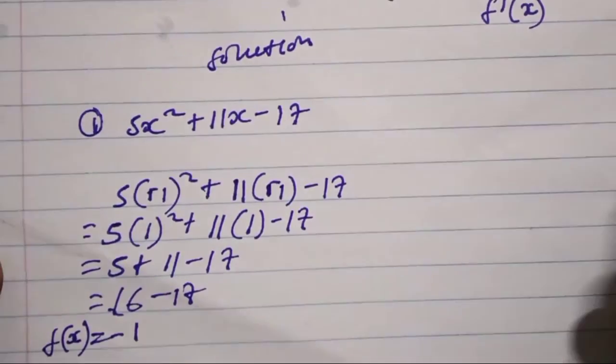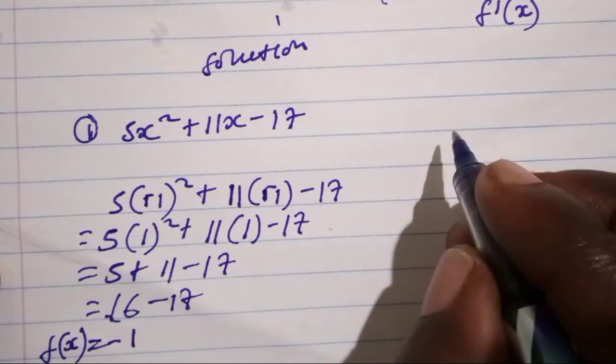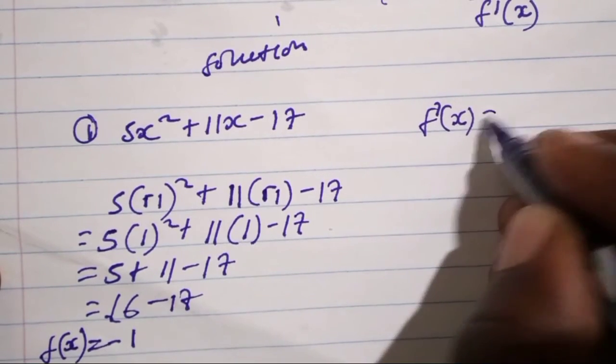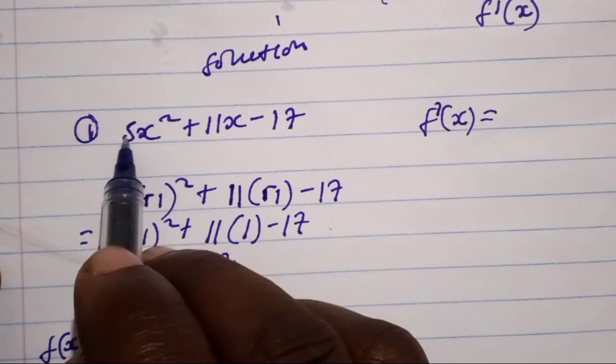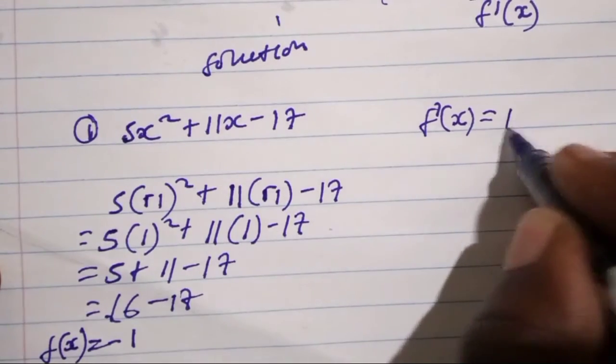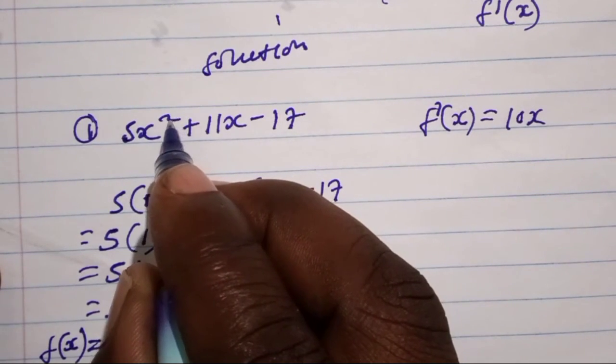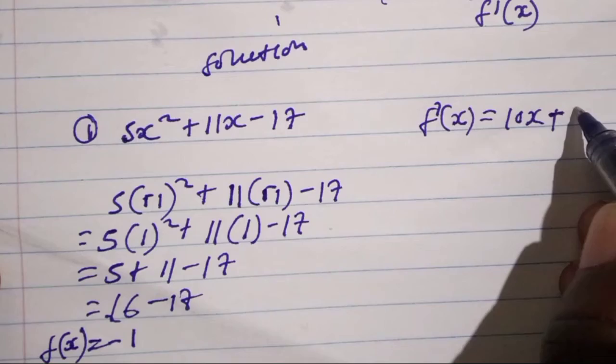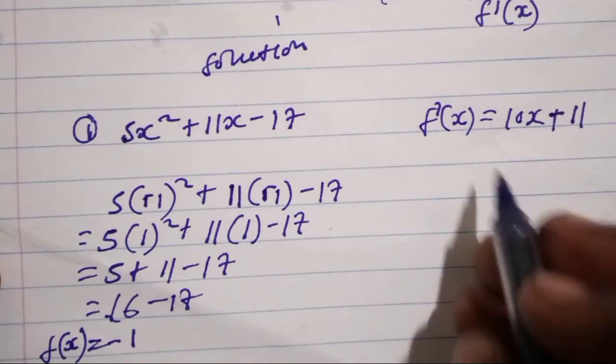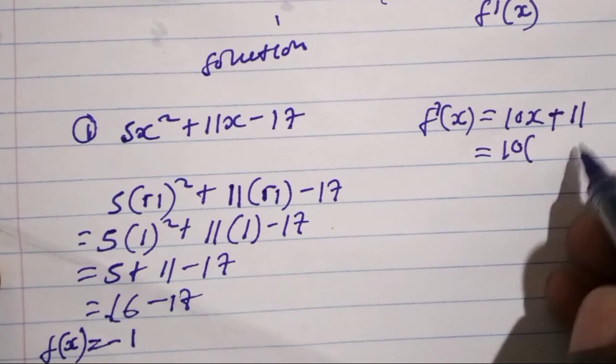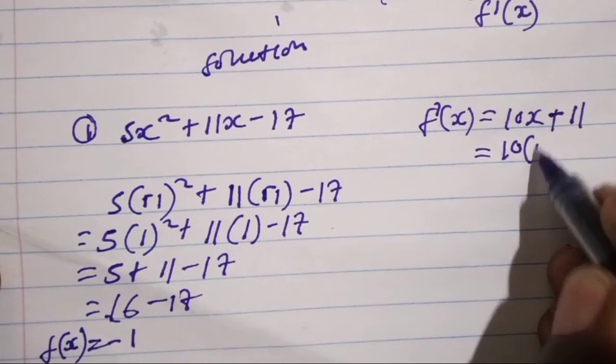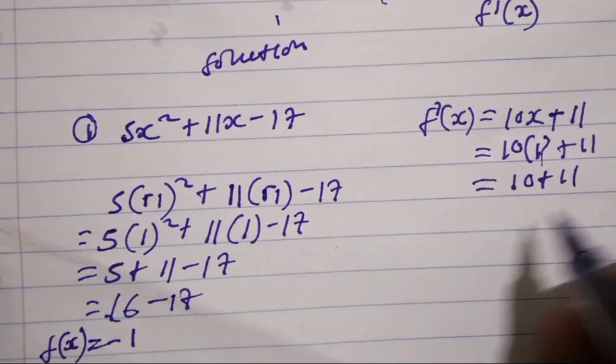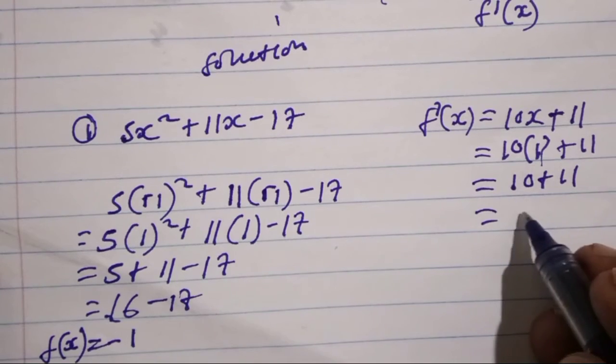Let's try to find this value. Let's differentiate this function which we have been given. f'(x), the derivative, will be if you differentiate this one it will be 5 times 2 which is 10x, if you subtract 1 here we have x, plus if you differentiate 11x we have 11. Now let's substitute even here with 1, so 10 open 1 plus 11, which will be 10 times 1 which is 10 plus 11 which is 21.